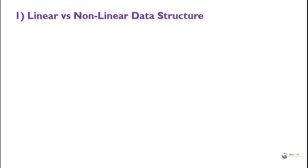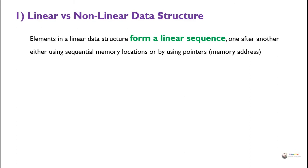The first classification: linear versus non-linear data structures. In a linear data structure, elements form a linear sequence one after another, either using sequential memory locations or by using pointers or memory addresses. The data may be stored at different locations but joined together by pointers, forming a linear sequence where we move from one element to the next.